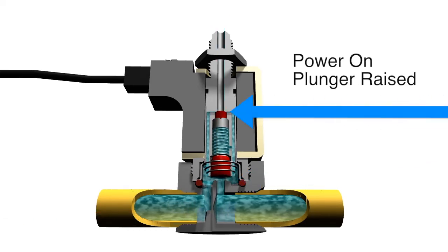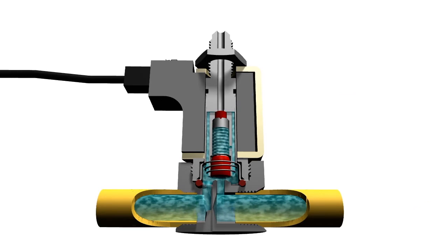When the coil is energized, the plunger is raised, sealing off the stop orifice and opening up the body orifice, allowing flow through the body of the valve from the body orifice port and out the stop port.